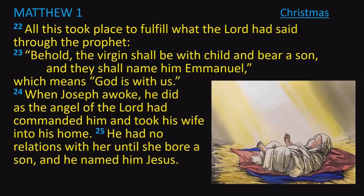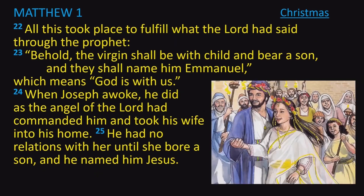All this took place to fulfill what the Lord had said through the prophet: 'Behold, the virgin shall be with child and bear a son, and they shall name him Emmanuel,' which means God is with us. When Joseph awoke, he did as the angel of the Lord had commanded him and took his wife into his home. He had no relations with her until she bore a son, and he named him Jesus.